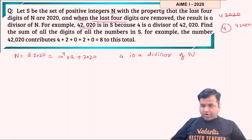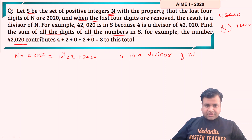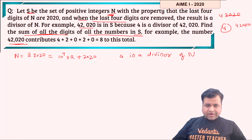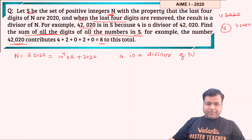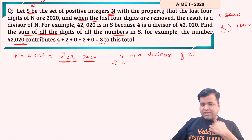We need to find the sum of all the digits of all the numbers in S, where S is the set of all positive integers n with this property. For example, the number 42020 would contribute 4 + 2 + 0 + 2 + 0 = 8. So first we will find how many elements are in set S. Since a is a divisor of n and n = 10^4 × a + 2020, a must be a divisor of 2020.